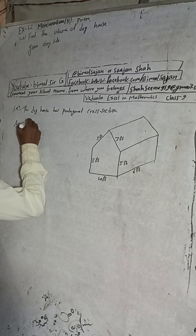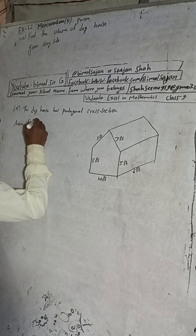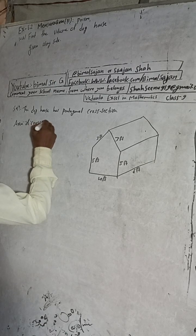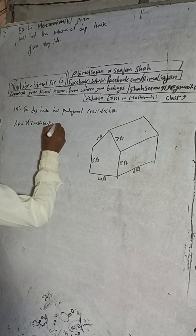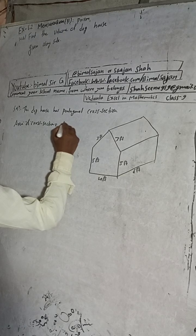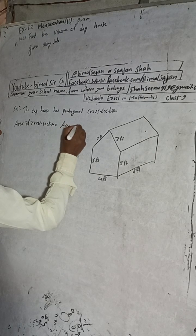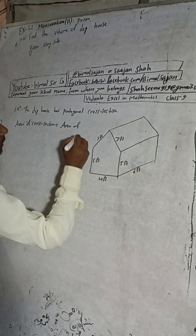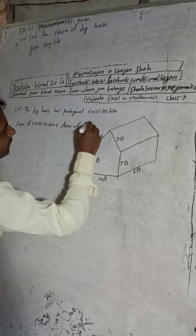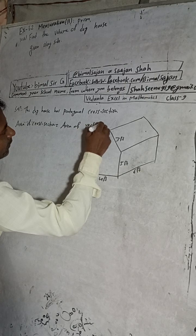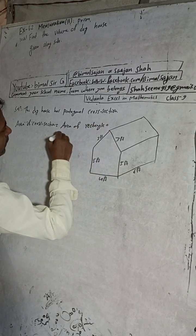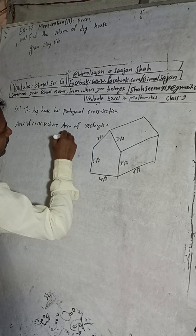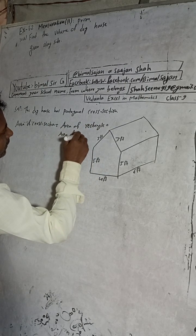Area of cross section is equal to area of rectangle plus area of triangle.